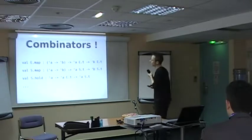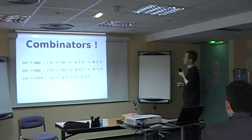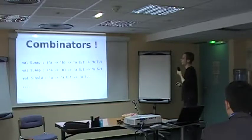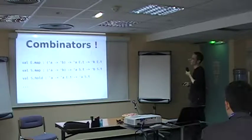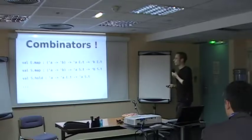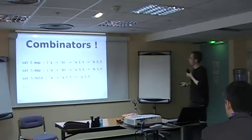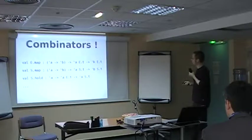So for example, the e.map combinator returns an event that has exactly the same occurrences as those of the event that is given in an argument, except that they are transformed by this function. The s.map does the same thing, but on signals. So this signal here is exactly this signal, except that it's transformed by this function.